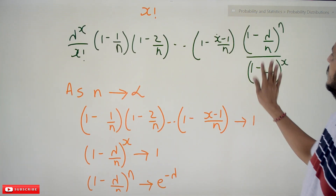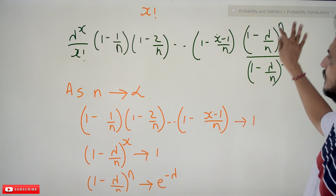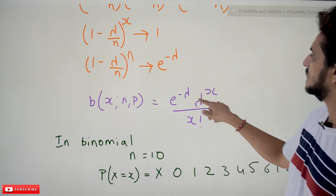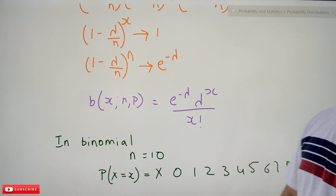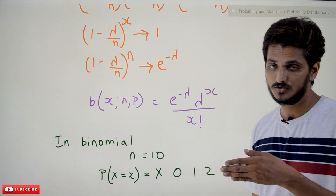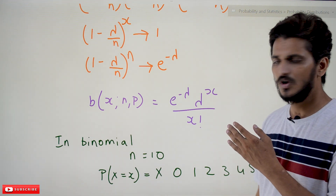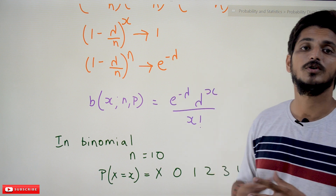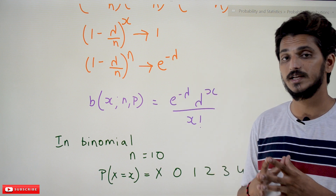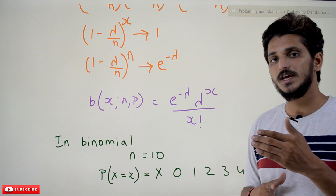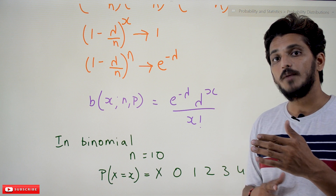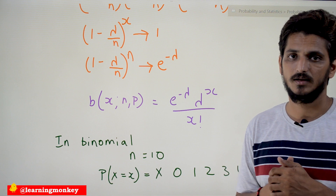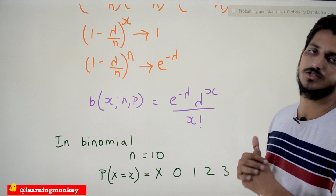Substituting these limits — 1, 1, and e^(−λ) — we get the equation: e^(−λ) · λ^x / x!. So as n tends to infinity and p tends to 0, we obtain the probability mass function of Poisson's distribution. That is why Poisson's distribution is called an approximation of binomial distribution — the equation was derived from binomial distribution.